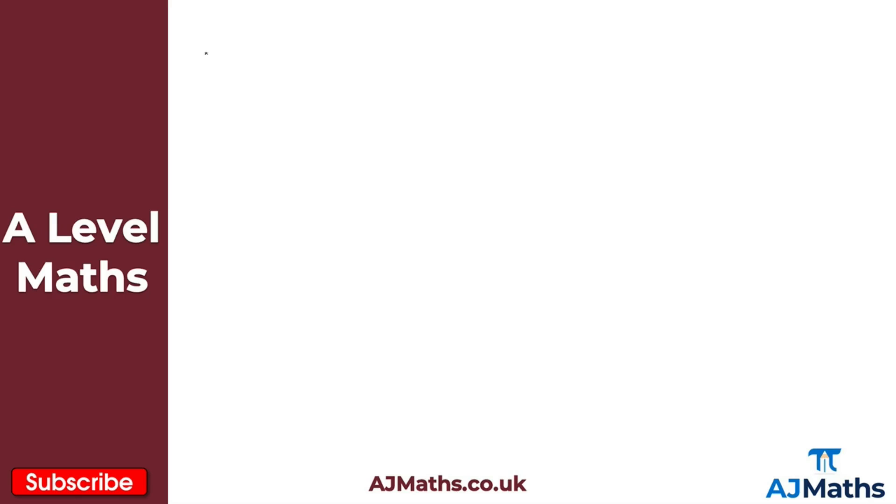So I've got two vectors that are equal. So if the vector AB is equal to the vector CD here. And what we can see is AB and CD are equal in length. If they are equal in length, just jot this down here. And they must be parallel. So they're also parallel. So that's an important point to make there.